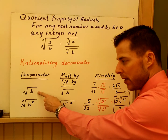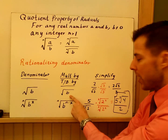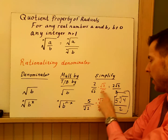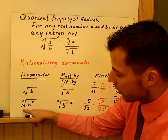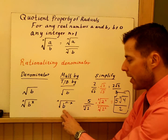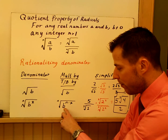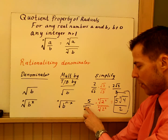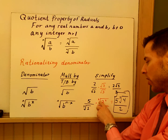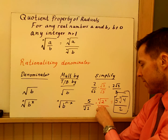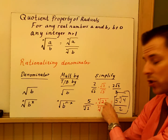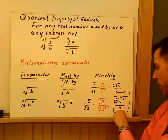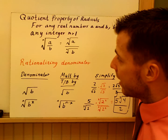Two key points on rationalizing: if you have a square root of b in the denominator, multiply by that root over itself. For example, two over root three — multiply by root three over root three to get two root three over three. The more complex case: if you have the nth root of b to the x in the denominator, multiply top and bottom by the nth root of b to the n minus x. For example, five over the cube root of two — three minus one is two, so multiply by the cube root of two squared. You get five cube root of four over two, because the cube root of two cubed is just two.